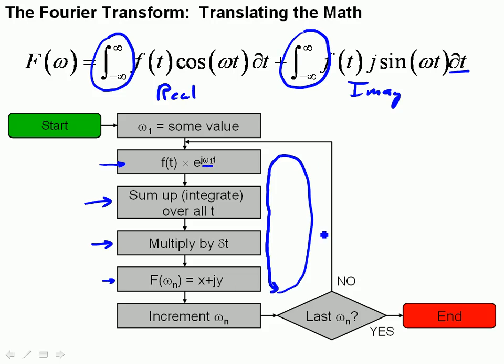So by going through this step, by multiplying and integrating, we end up, for each frequency we choose, with essentially a complex number.